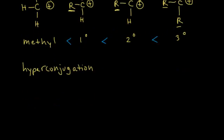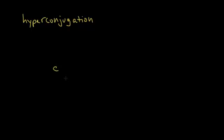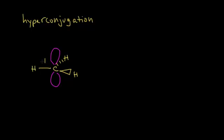Let's draw pictures to better understand hyperconjugation, starting with a methyl carbocation since it's the easiest. A methyl carbocation is a carbon directly bonded to three hydrogens. With a steric number of three, we have sp2 hybridization. So there are sp2 hybridized orbitals bonding with the s orbitals of those hydrogens, and there is also an unhybridized p orbital on that sp2 hybridized carbon. This sp2 hybridized carbon has a positive charge and trigonal planar geometry — the least stable kind.